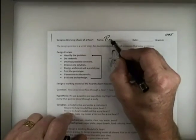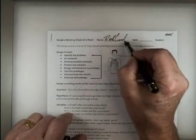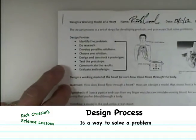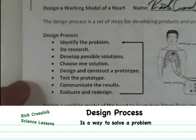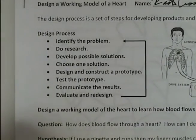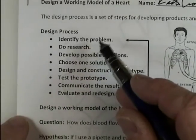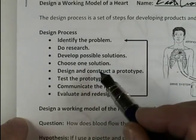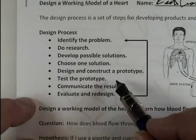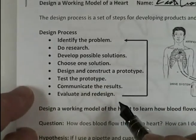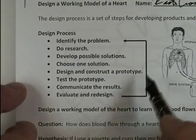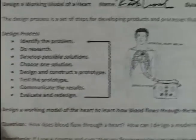The design process is a way to solve a problem, and scientists and engineers use it all the time. The steps are: identify a problem, do the research, develop possible answers, choose one solution, design and construct a prototype, test the prototype, communicate the results, and then reevaluate and redesign.